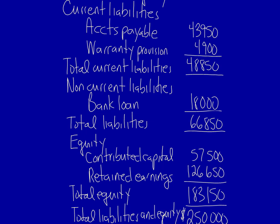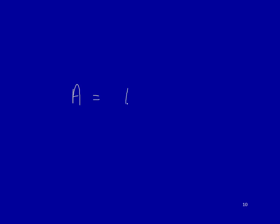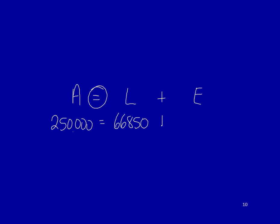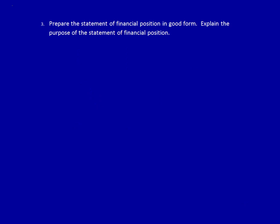Let's tie this in to the basic accounting equation: assets equals liabilities plus equity. That equal sign is incredibly important and must always be adhered to. We have total assets of $250,000, equal to liabilities of $66,850 plus equity of $183,150. The basic accounting equation mimics the structure of the statement of financial position — we always start with assets listed in order of liquidity, then liabilities listed in the order of when they will be settled, and finally equity listed in the same order as the statement of changes in equity. The next part of this question is to explain the purpose of the statement of financial position — I'll do that in the next video. Thank you for watching.